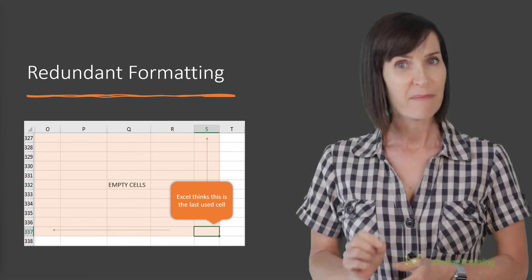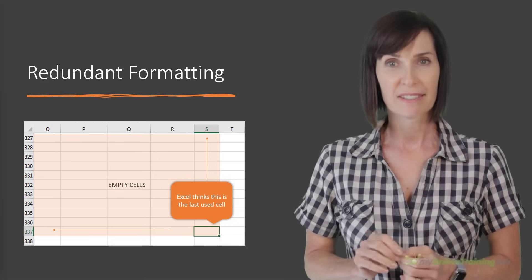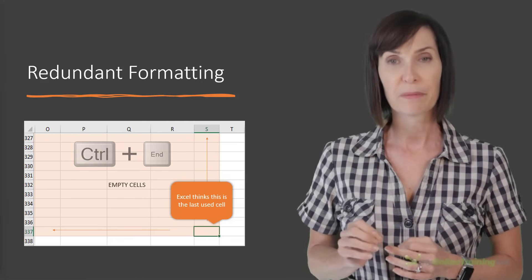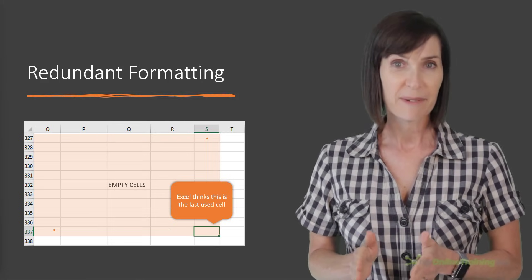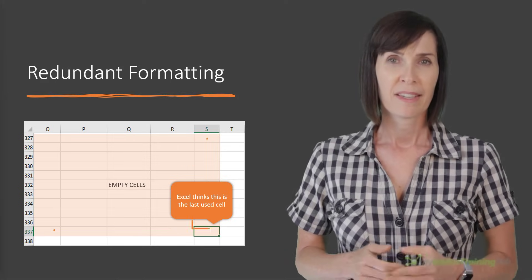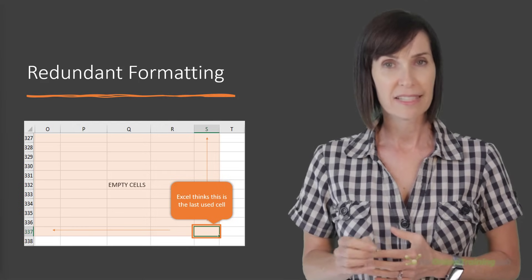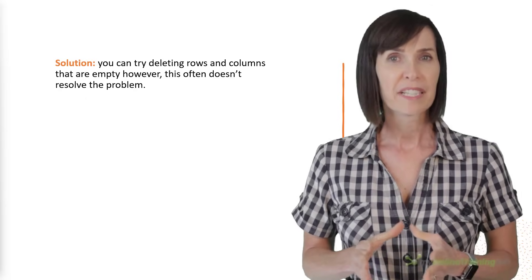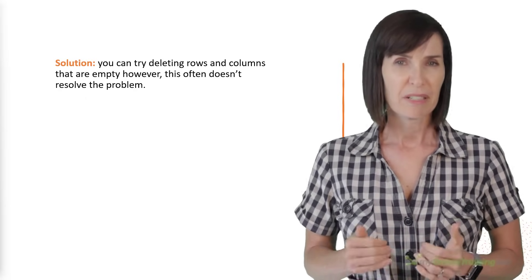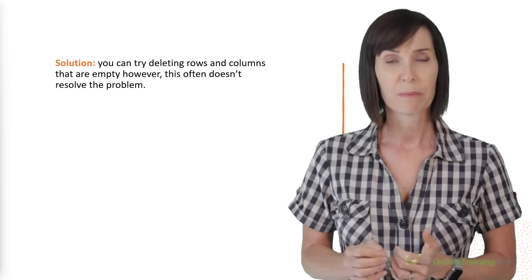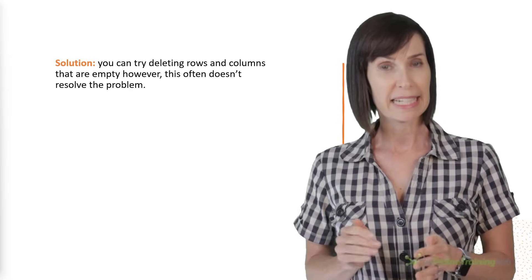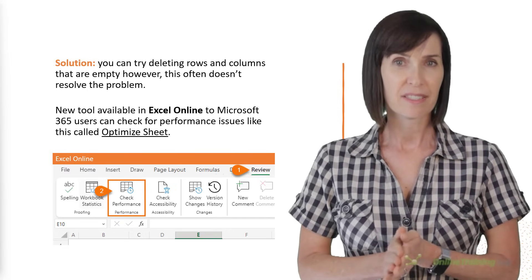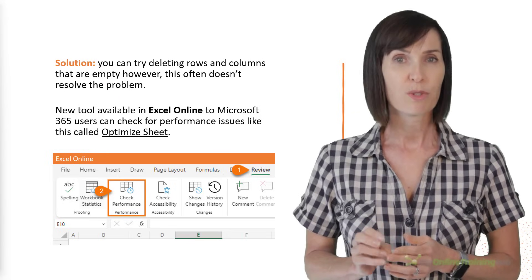Redundant formatting can sometimes linger in cells unbeknownst to you. Cells can appear empty, but Excel is still storing information about those cells in memory. If you press Ctrl End, you'll be taken to the last cell in the sheet that Excel is storing information for. If this isn't the end of your table, then you know you have redundant formatting. Here, Excel thinks the last used cell is S337, but there's no data in the cells to the left or above it. One way to fix it is to delete rows and columns that are empty, but I've found this often doesn't resolve the problem. By the way, make sure you back up the file before you delete anything. Thankfully, there's a new tool available in Excel Online for 365 users that can check for performance issues like this called Optimize Sheet. It's available on the Review tab of the ribbon.